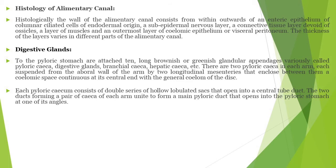The digestive gland is present in the form of the pyloric seca. In each arm, the pyloric duct connects to the pyloric seca, and each is suspended from the aboral surface of the arm by two longitudinal mesenteries that enclose between them the coelomic septa, continuous at its central end with the general coelom of the disc. Each pyloric seca consists of a double series of hollow lobulated sacs that open into a central duct. The two ducts forming the pair of seca of each arm unite to form a main pyloric duct and open into the pyloric stomach at its end angle.